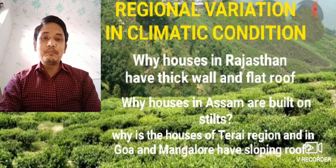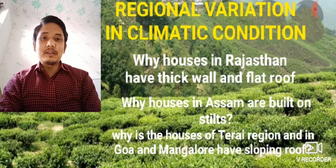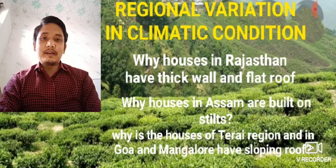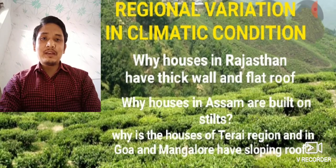Similarly, there is heavy rainfall in Meghalaya — more than 400 centimeters of annual rainfall — whereas in Rajasthan there is scanty rainfall of less than 50 centimeters.